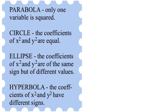Now here are the rules. A given equation is a parabola if only one variable is squared. A conic section equation is a circle if the coefficients of both x² and y² are equal or the same.